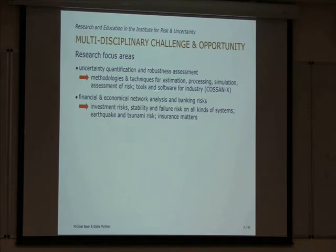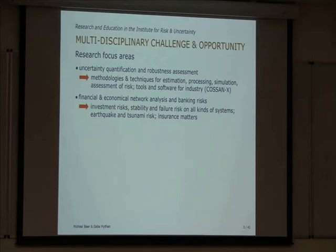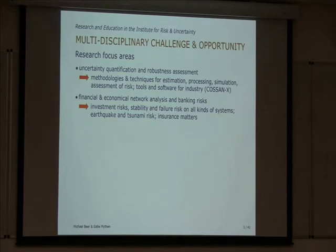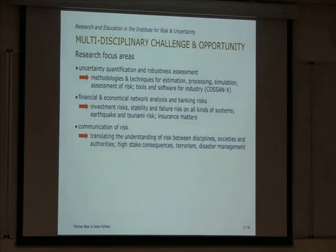The second focus area is financial and economical network analysis and banking risks, which includes investment risks, stability, and failure risks. But it's also connected to environmental sciences — earthquake and tsunami risk — and to structures and systems in engineering. Insurance matters come in as well. From the social and psychological point of view, we have to think about whether the risks we have in engineering are acceptable to society. The communication of risk is extremely important when we work across disciplines.